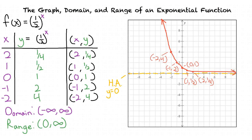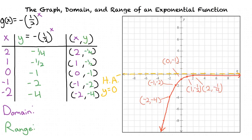We can now transform our graph. The first thing we need to do is reflect the graph over the x-axis. The biggest change when we reflect over the x-axis is that all our y values change from positive to negative. This means our range is now negative infinity to 0, not including 0, since the y values get smaller when the x values get smaller, but when the x values get larger the y values get closer to 0 but do not reach 0. Our domain stays the same at negative infinity to infinity.